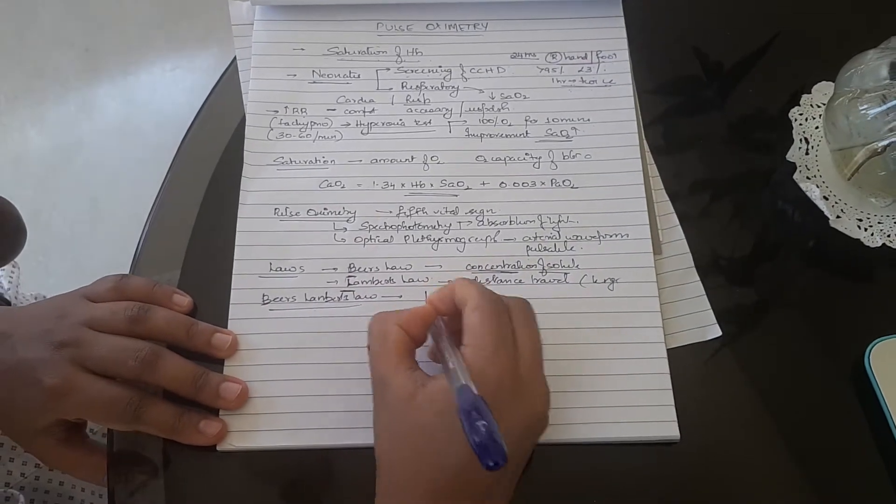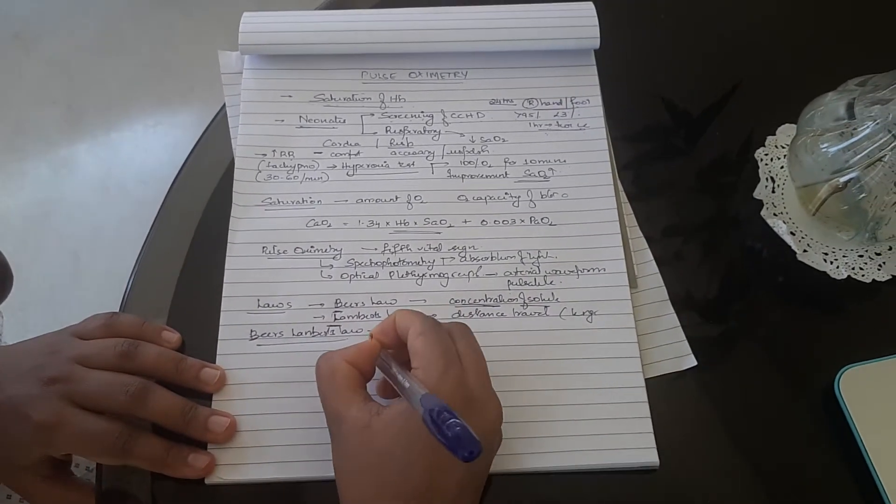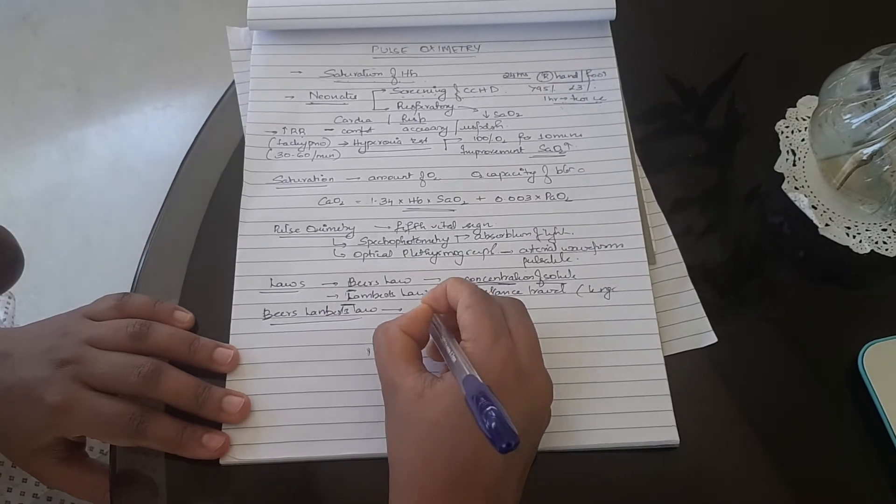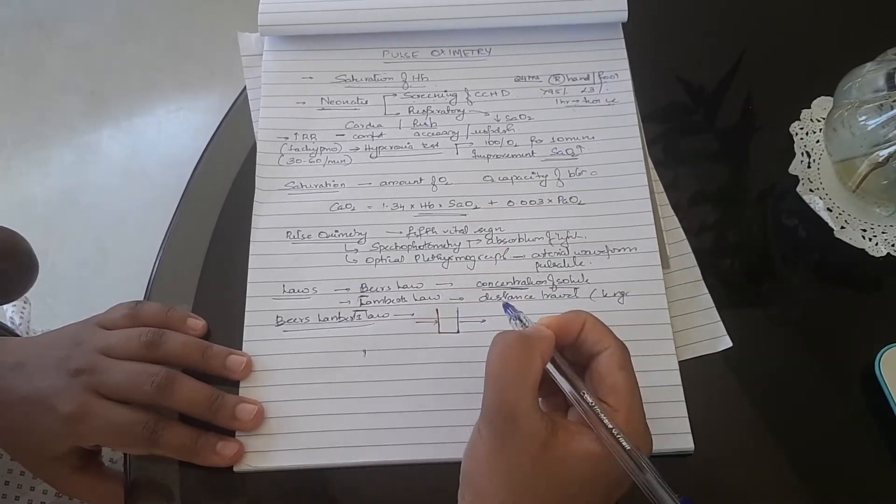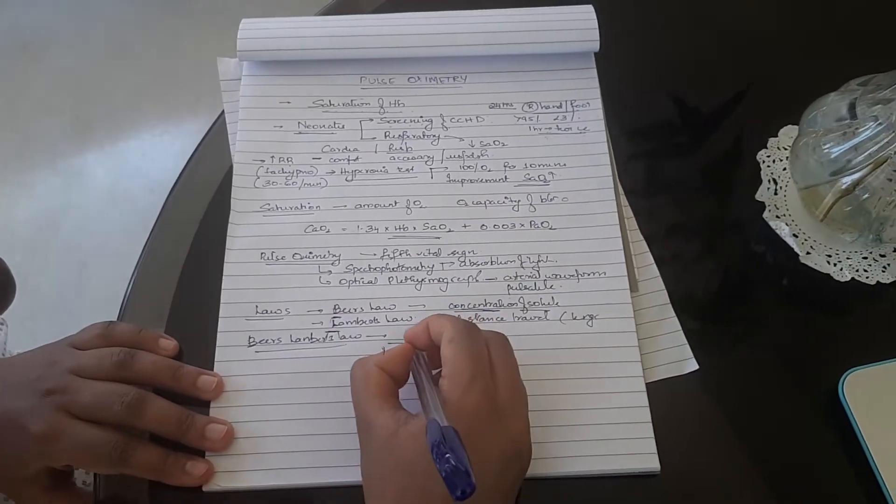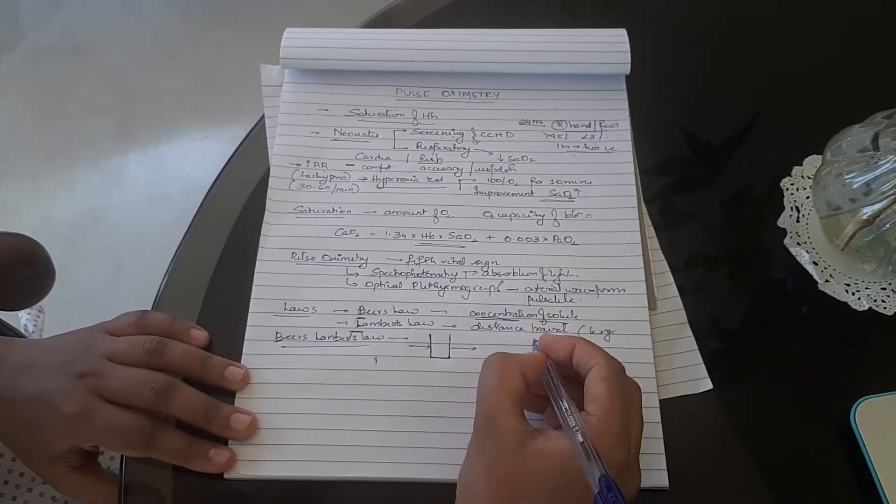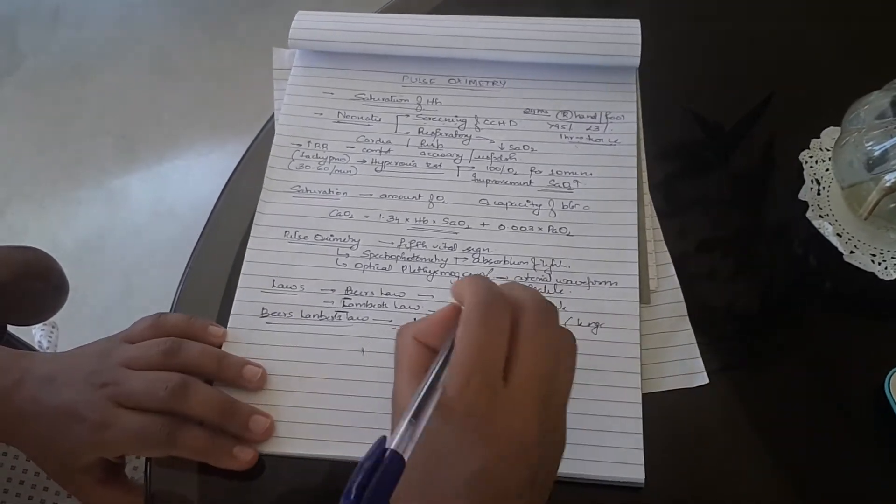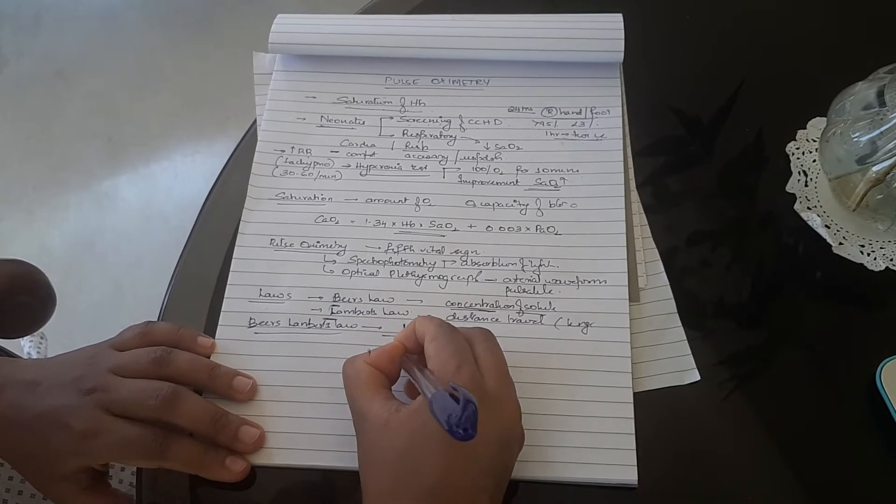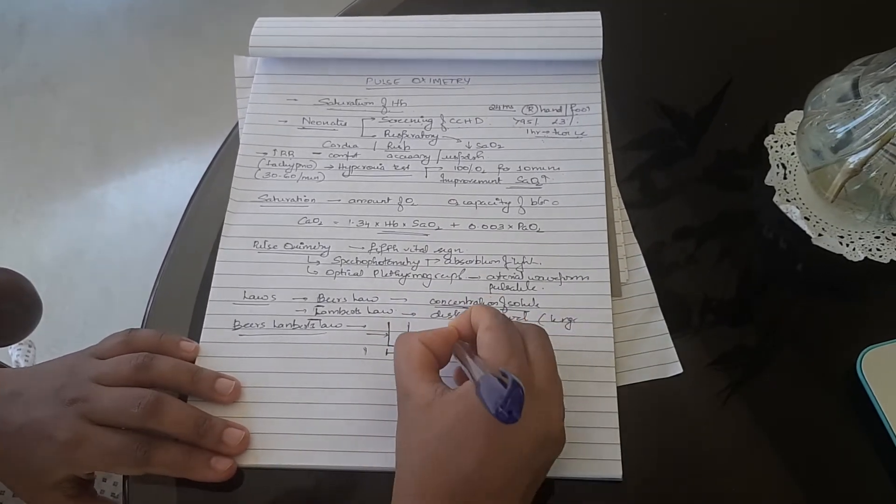Beer-Lambert's Law basically says that the intensity of the transmitted light through a cuvette of known dimensions containing a solution with a known concentration of solute is dependent on multiple factors which includes the length travelled and the concentration of the solute.